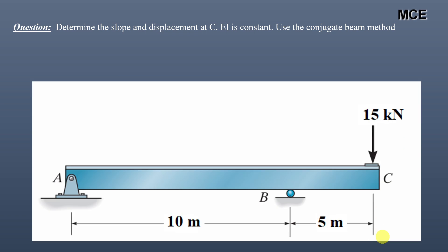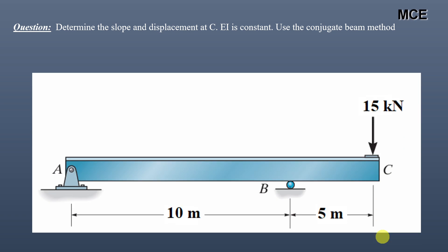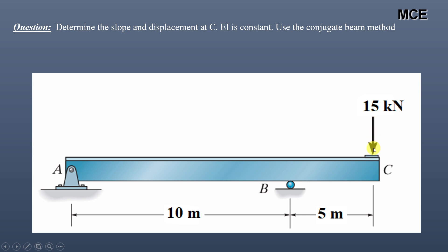Hello and welcome back to Master Civil Engineering. In the previous video we learned how to find the slope and displacement of a beam using the moment area method. In this video we will learn how to find the slope and displacement of a beam using the conjugate beam method. We have a question: determine the slope and displacement at point C, assuming EI is constant, using the conjugate beam method. This is an overhanging beam of span 15 meters. Support A is a pin support, support B is a roller support, and a 15 kilonewton concentrated load is applied at point C.